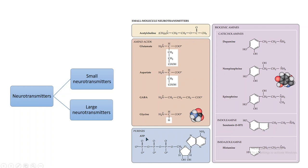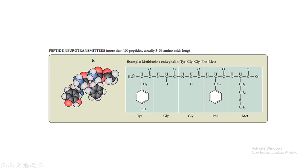Other small neurotransmitters include ATP and biogenic amines comprising dopamine, noradrenaline, and adrenaline, as well as serotonin, also known as 5-hydroxytryptamine. The large neurotransmitters are peptide neurotransmitters, usually peptides of around 3 to 36 amino acids.